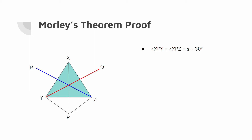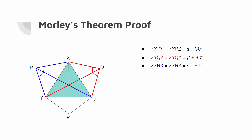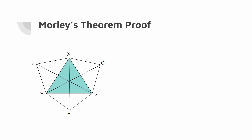Now let us do the same with R and Q. Draw QX and QZ along with RX and RY. We can assume that angle YQZ equals angle YQX equals beta plus 30 degrees, and angle ZRX equals angle ZRY equals gamma plus 30 degrees. Angle ZPY equals 2 times (alpha plus 30 degrees), which gives 2 alpha plus 60 degrees. Similarly, angle XQZ equals 2 beta plus 60 degrees and angle YRX equals 2 gamma plus 60 degrees.